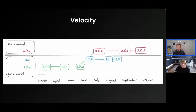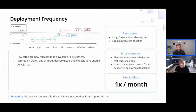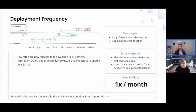Velocity — leading off of DORA metrics from Accelerate — covers how often you're shipping and whether you're shipping small batches. The first flavor is deployment frequency: how often are releases made to customers? In a SaaS world you might deploy 100 times a day, but that's not reasonable for on-prem releases, so expectations differ. We see best-in-class vendors trying to ship at least once a month.